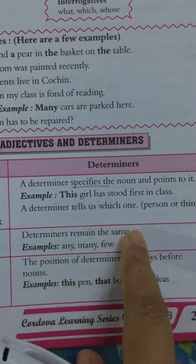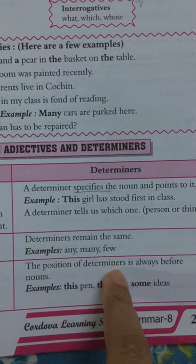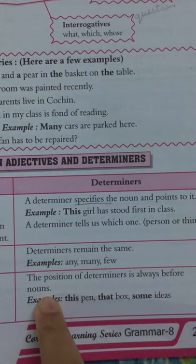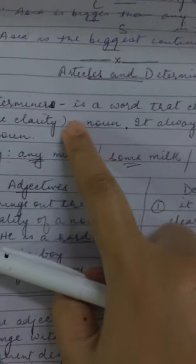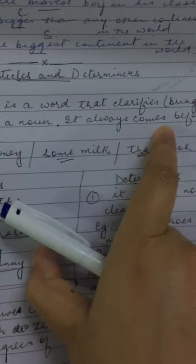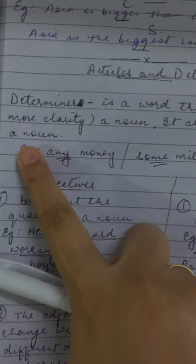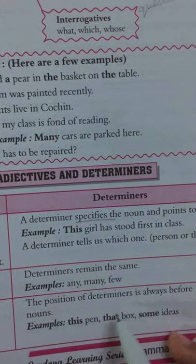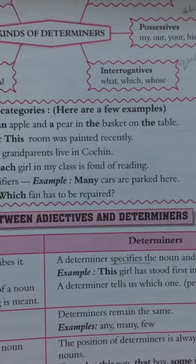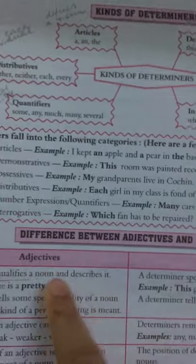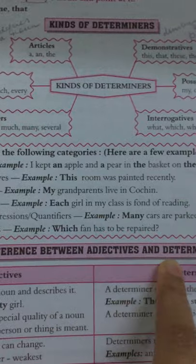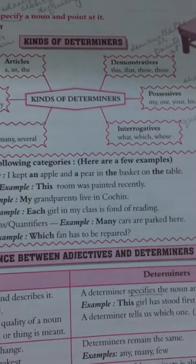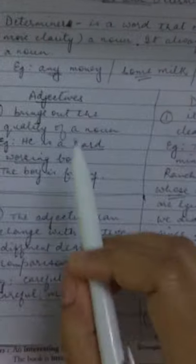For determiners, the position is always before the noun — that is a must. For example: this pen, that box, some ideas. Determiners always come before a noun.